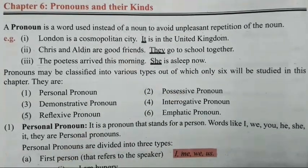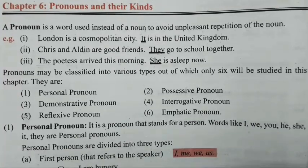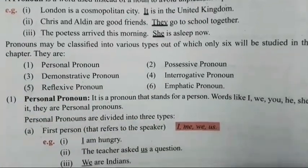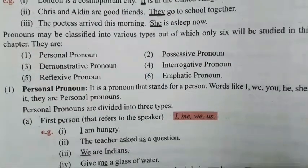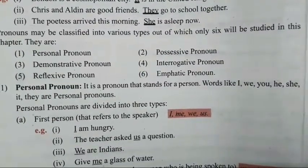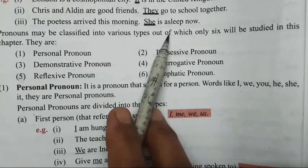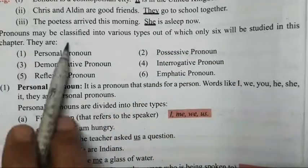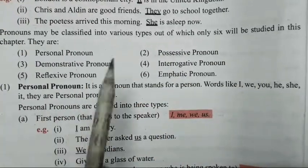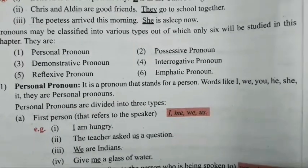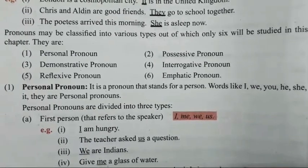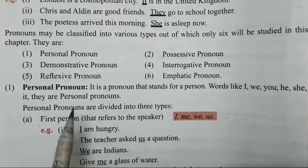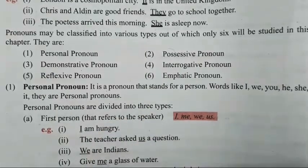It is very easy to identify a pronoun which is used instead of a noun. Now, pronouns may be classified into various types, out of which only six will be studied in this chapter. Toh matlab bhot sare kinds hai — it has been classified into various types — par jo hum padhne wale hai, these are the six ones. So we will study one by one.